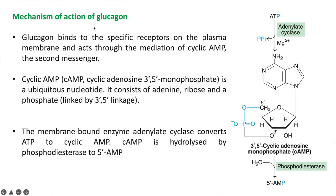In the mechanism of action of glucagon, glucagon binds on its specific receptor present on the plasma membrane and acts through mediation of cyclic AMP, which is the second messenger. Cyclic AMP is formed when adenosine triphosphate binds to adenylate cyclase enzyme, releasing two phosphate groups, converting ATP into cyclic adenosine monophosphate.